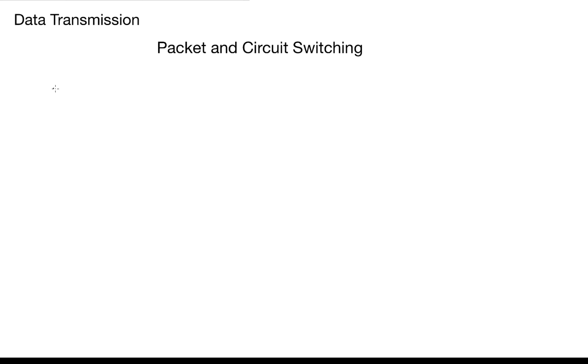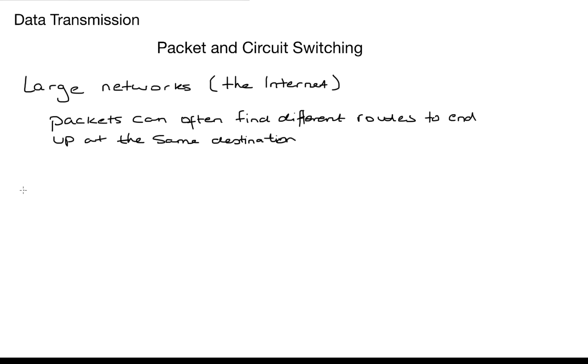So now we need to look at how our packets make their way around the network once they leave our machine. There's two different ways of sending them around our network: packet and circuit switching. Large networks such as the internet need to be able to find their way around to any destination address and packets can often find different routes to end up at the same destination.